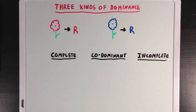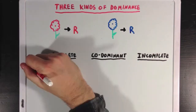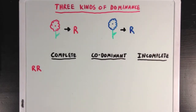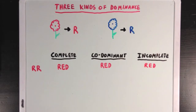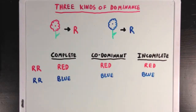Let's start by looking at three different genotypes and the phenotypes you'd see for each under each dominance pattern. Starting with genotype two red Rs — in all cases the flower petals will be red, since we only have red Rs in the genotype. Similarly, if the genotype had two blue Rs, then in all cases the flower petals will be blue, since we only have blue Rs in the genotype.